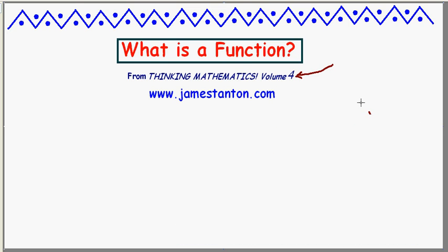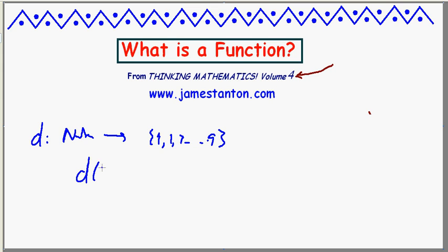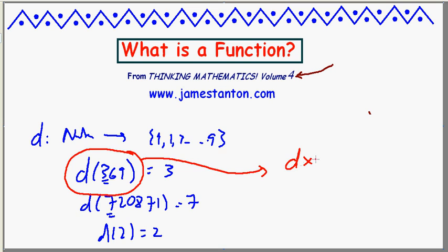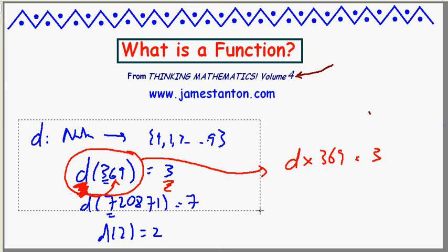Another example is the digit function, D. It goes from the set of whole numbers to the set {1, 2, 3, ..., 9}, and the rule is: assign to each whole number its beginning digit. For example, D of 369 would be 3, and D of 7,280,871 would be 7. D of 2 would be 2. This is why it's a hard concept for algebra students — the notation D(369) looks like multiplication to middle schoolers, but I'm saying the function D applied to the number 369 gives the answer 3. Very confusing notation, but that's a well-defined function.